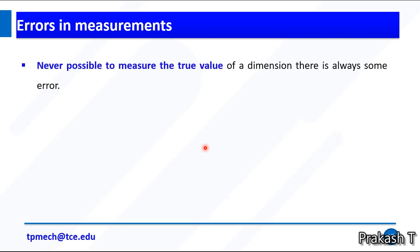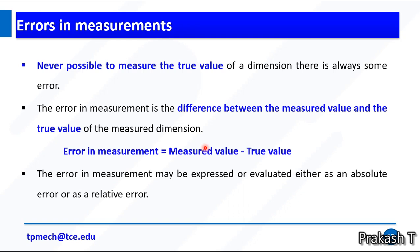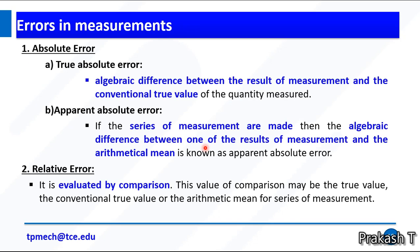Errors in measurements: it's never possible to measure the true value of a dimension because there is always some error. The error of measurement is the difference between the measured value and the true value of the measured dimension. Error equals measured value minus true value. The error in measurements may be expressed either as an absolute error or a relative error.